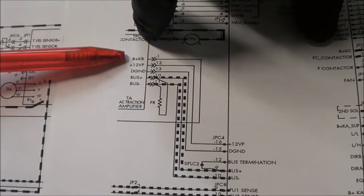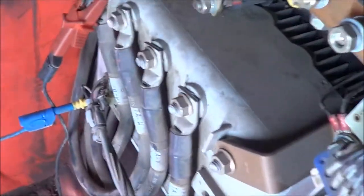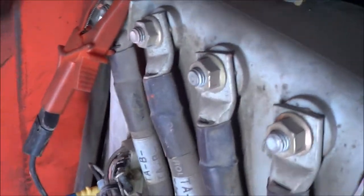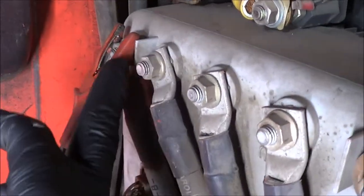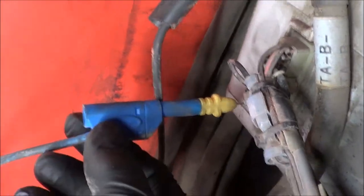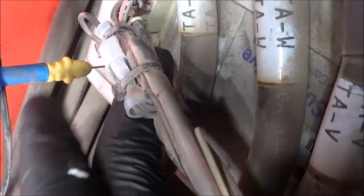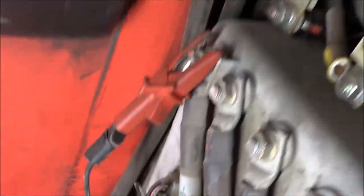Okay, so my leads are now hooked up. Black lead is gonna be on the negative here and my blue channel on channel number one is hooked up to pin number one on the traction amplifier, which should have battery voltage when you turn the key on.